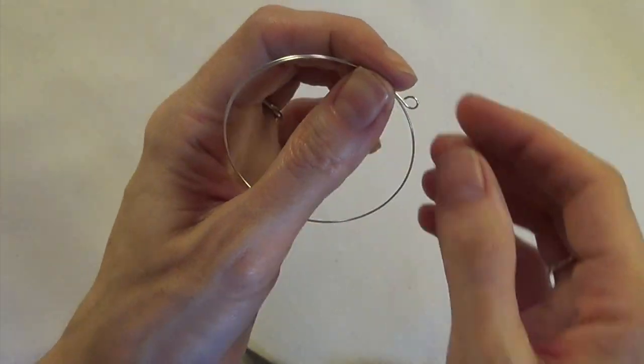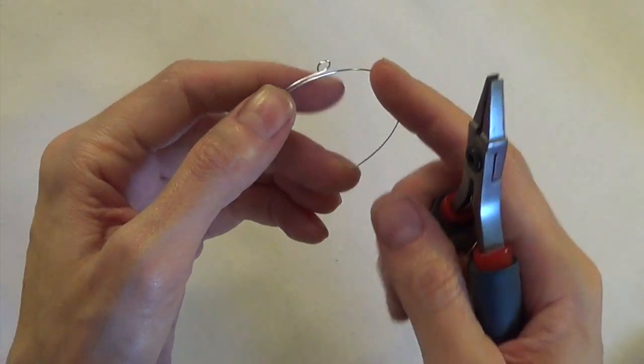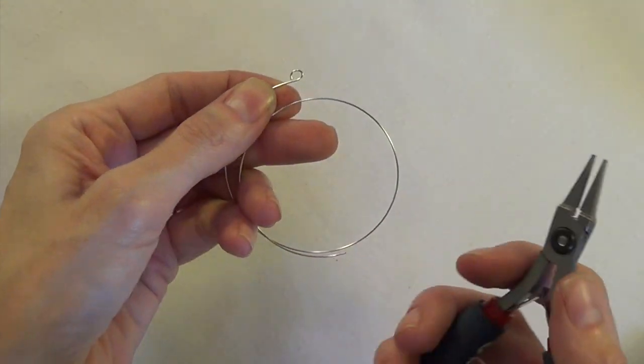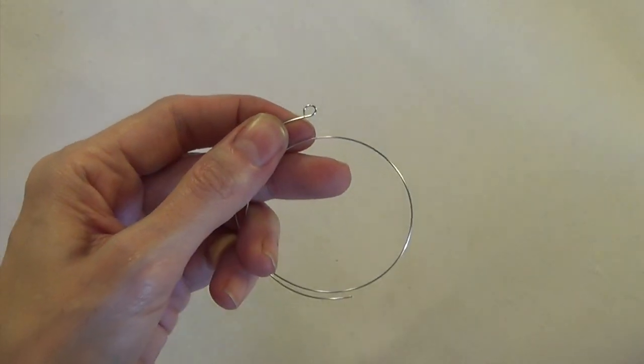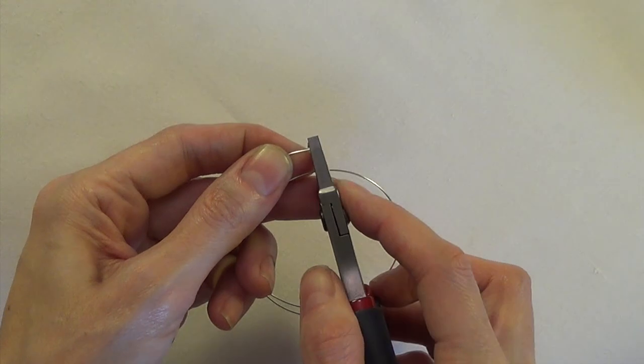I've messed up the shape of the loop but that's okay because we're going to turn it on its side. So here we want to bend this at a 90 degree angle. I'm going to bend it up towards me or straight up to the ceiling grabbing it with my flat nose pliers and I'm just going to bend it like that.